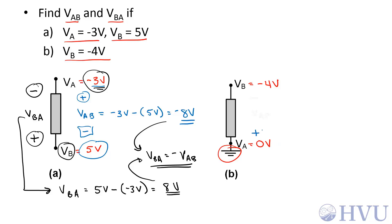VAB assumes that node A is at the higher voltage, so that's my positive terminal, and node B is at the negative terminal. To get the voltage difference, I take the voltage at the positive terminal, which is 0 volts, and I subtract from that the voltage at the negative terminal, which is negative 4 volts. 0 minus negative 4 is positive 4 volts.